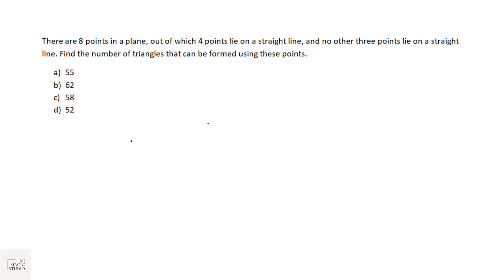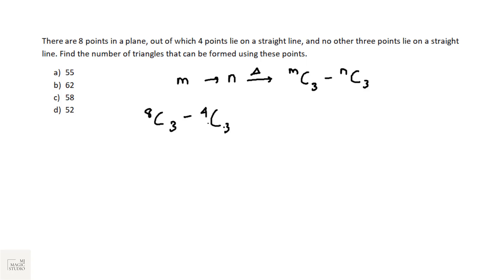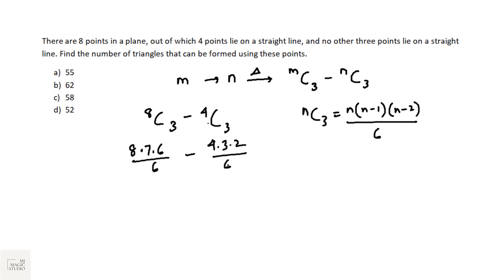A classical application of combinations to geometry. There are 8 points on a plane, of which 4 are collinear (on a straight line), and no other 3 points are collinear. Find the number of triangles that can be formed. The formula is MC3 − NC3, where N points are collinear. So: 8C3 − 4C3 = (8×7×6/6) − (4×3×2/6) = 56 − 4 = 52 triangles. Answer: option D, 52.